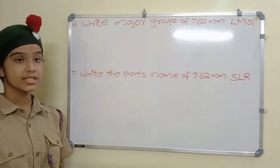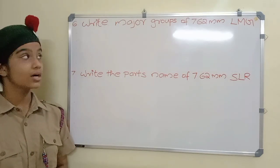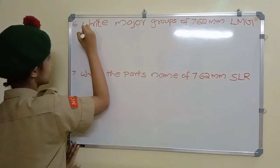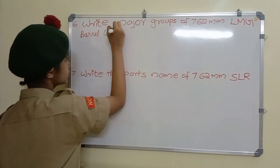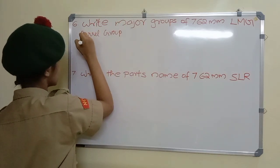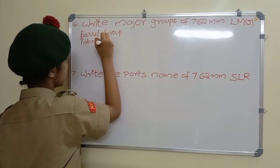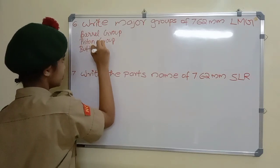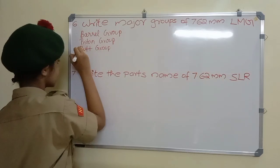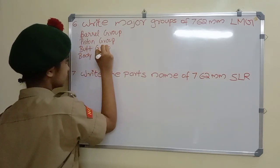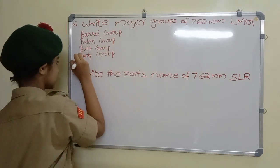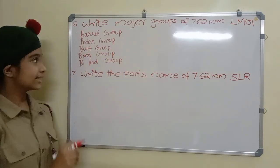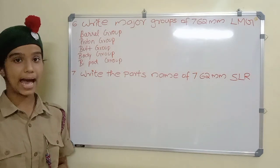Write the major groups of 7.62 mm LMG. Answer: Barrel group, piston group, butt group, body group, and bipod group.